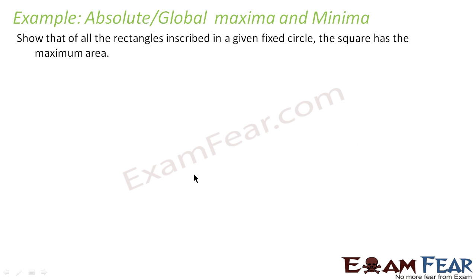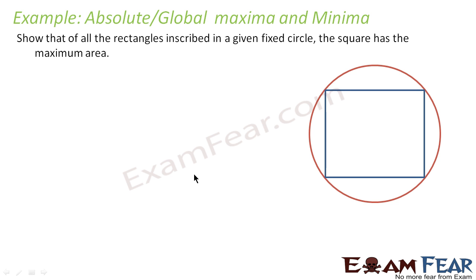One more example: we have to show that the rectangle inscribed in a given fixed circle has maximum area. Inside this circle we have a rectangle, and the question says the one with maximum area has to be a square — that is, both sides will be equal. That is what we have to prove.